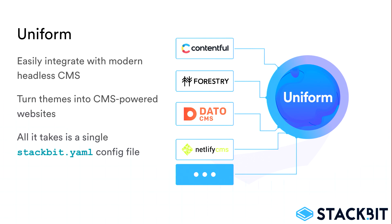statbit.yaml gives users, clients, or companies the ability to create fast, secure, and low-maintenance CMS-powered websites in a single click. As long as your theme is structured schema-driven by markdown for content and can support JSON, YAML, or TOML for data and configuration, you can use Uniform to bring it to Statbit.